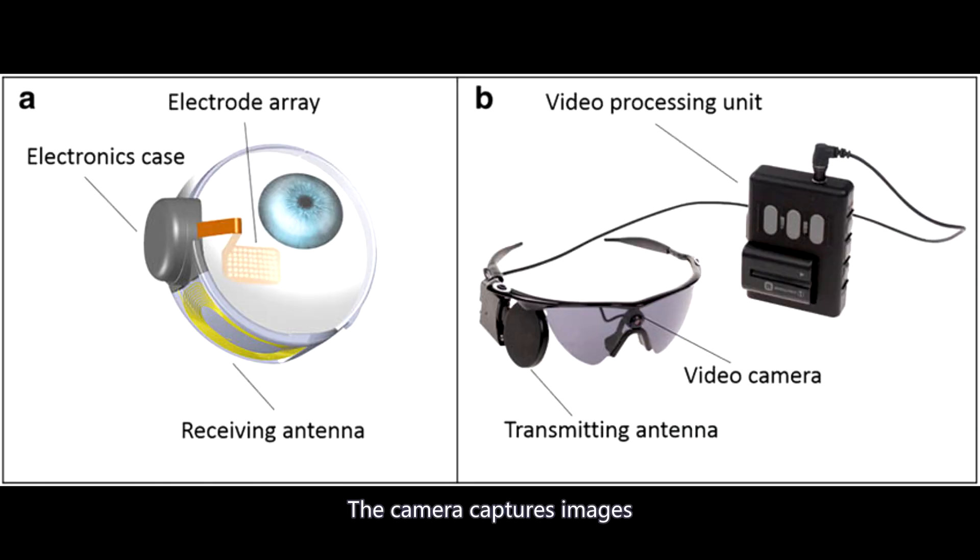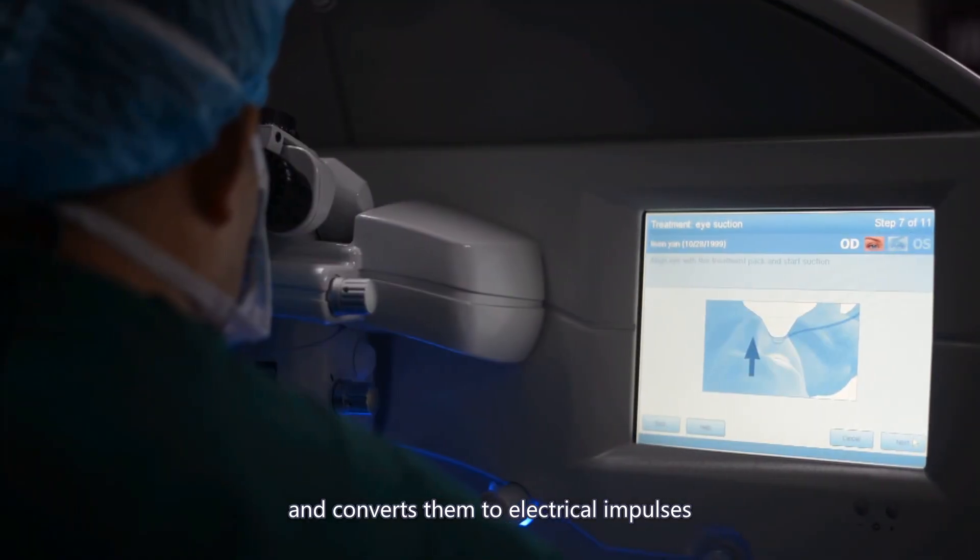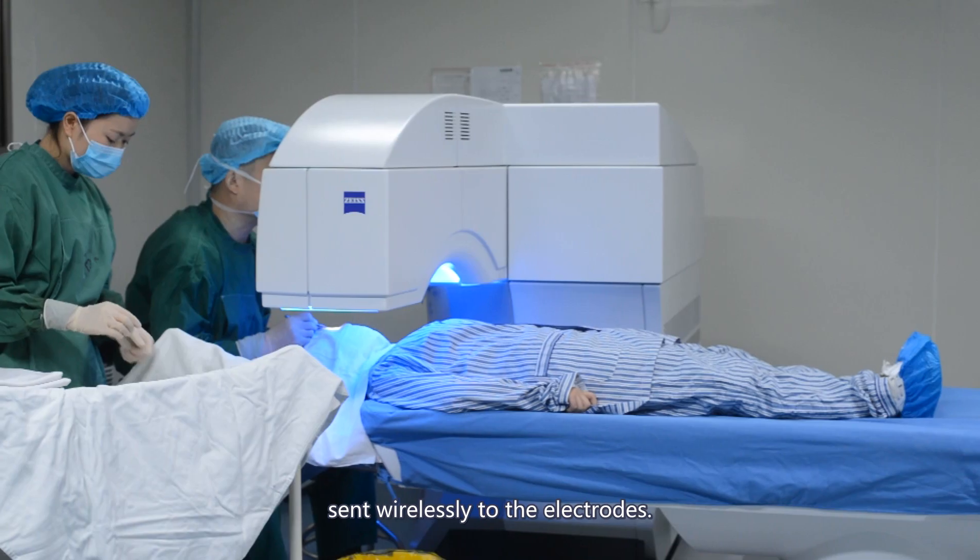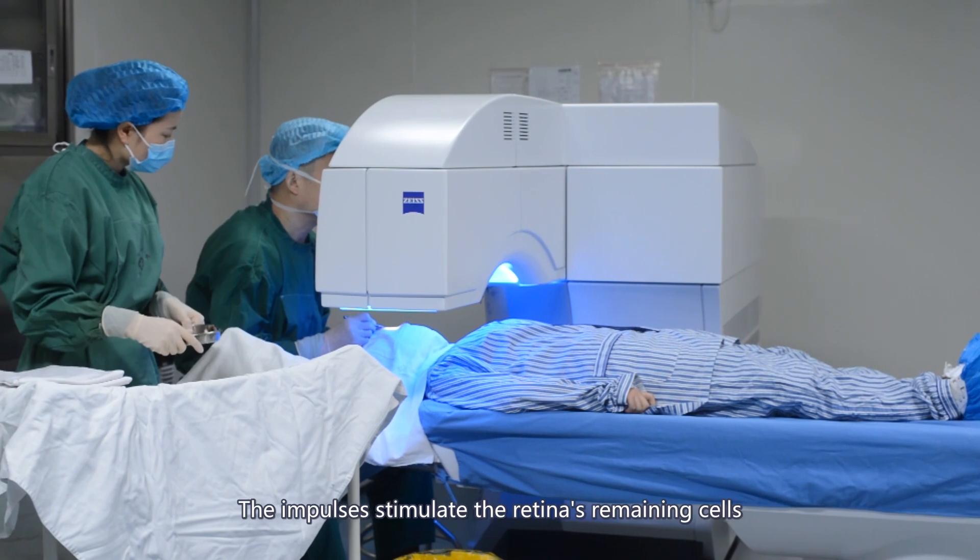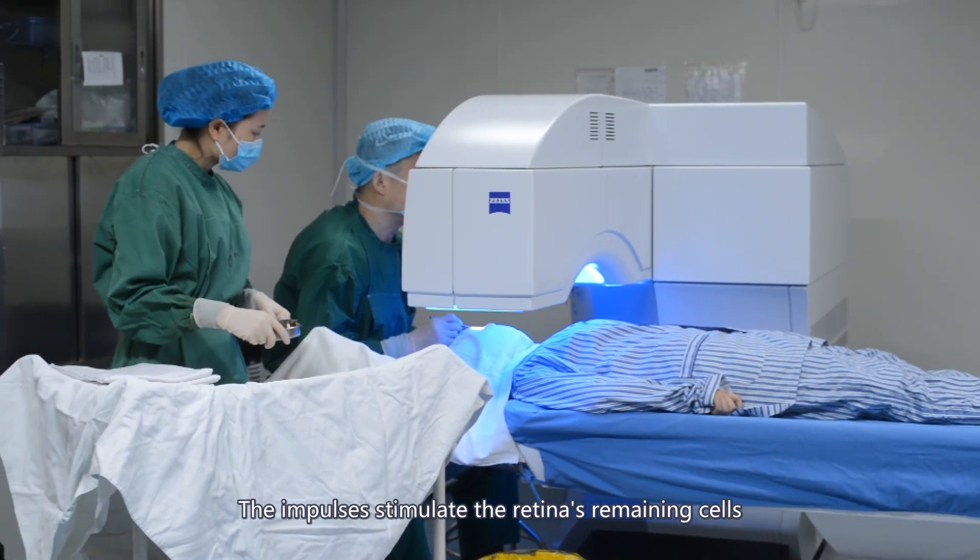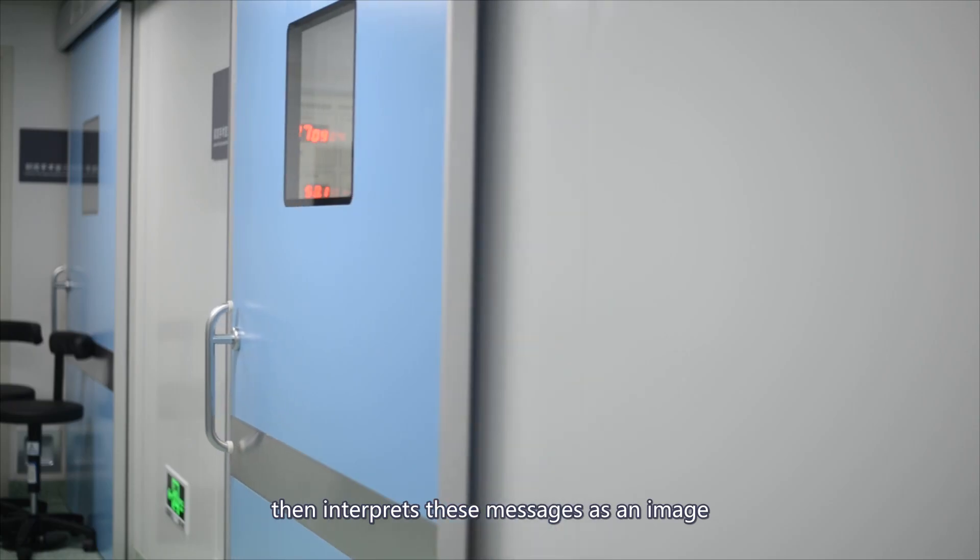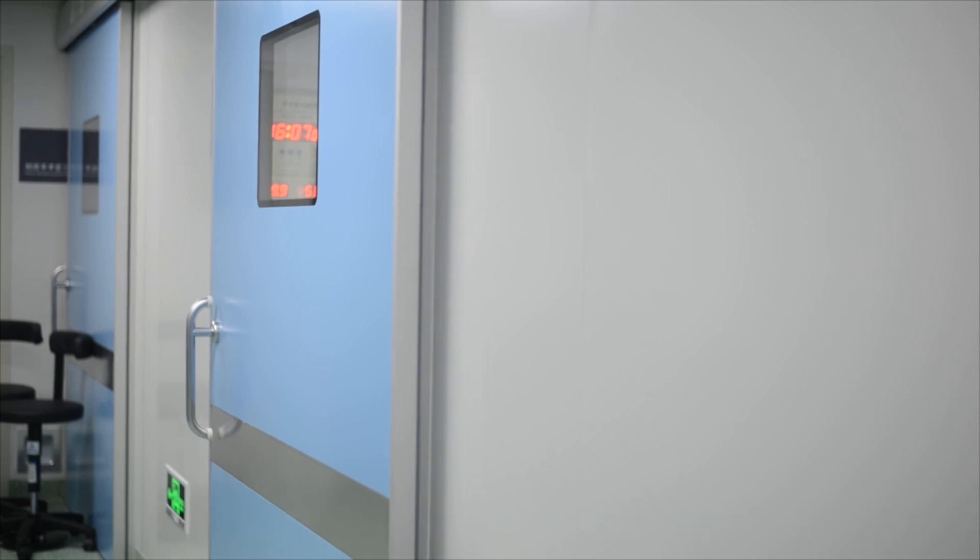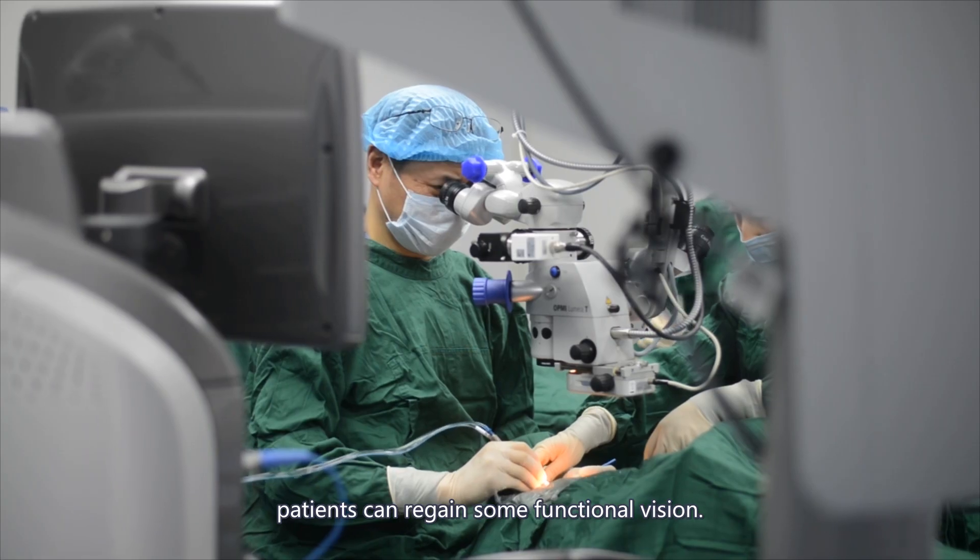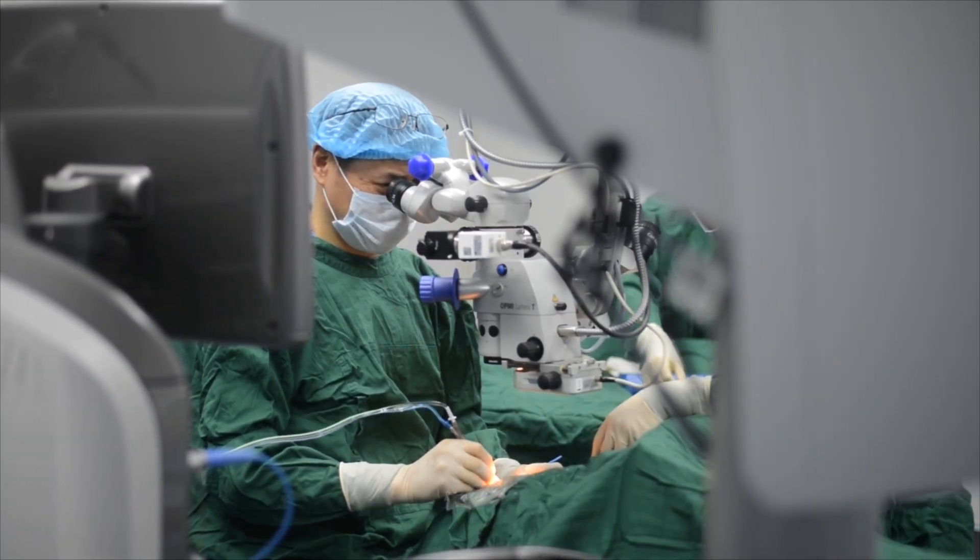The camera captures images and converts them to electrical impulses sent wirelessly to the electrodes. The impulses stimulate the retina's remaining cells, which send messages to the brain. The brain then interprets these messages as an image. Over time, patients can regain some functional vision.